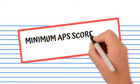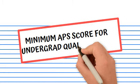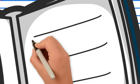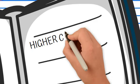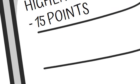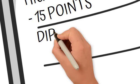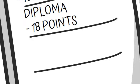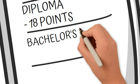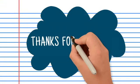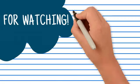The minimum APS scores for undergraduate qualifications are as follows. For Higher Certificates, you have to have at least 15 points. For a Diploma, a minimum of 18 points. And for a Bachelor's Degree, you'd have to have a minimum of 21 points. However, it's very dependent on the specific Bachelor's Degree and the university.